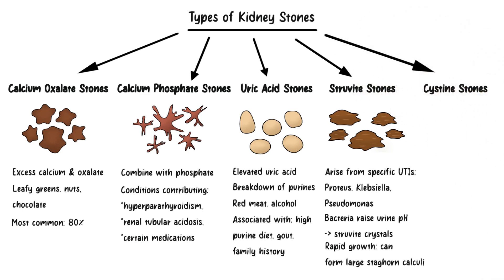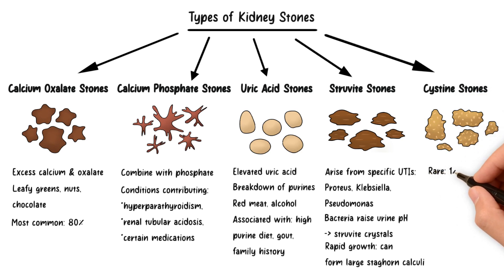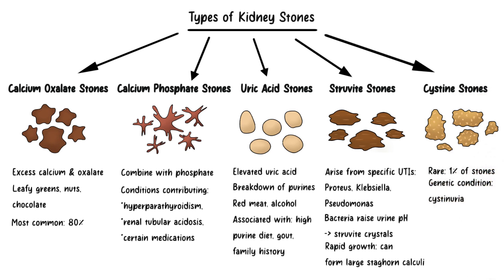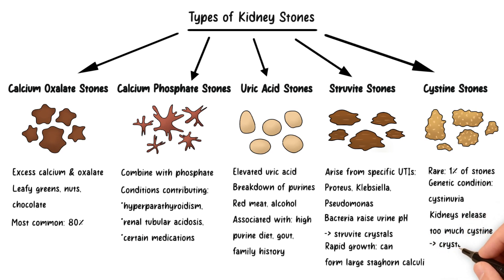Lastly, we have cystine stones. These stones are quite rare, accounting for only about 1% of all kidney stones. They are hereditary and result from a genetic condition known as cystinuria. In this condition, the kidneys excrete too much cysteine — an amino acid — into the urine. Over time, the excess cysteine can accumulate and crystallize, eventually leading to stone formation.